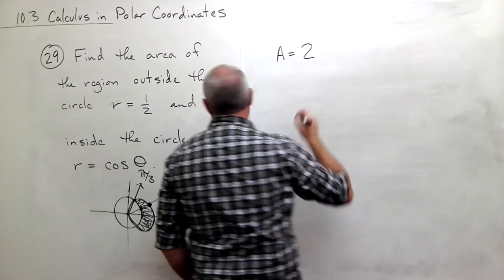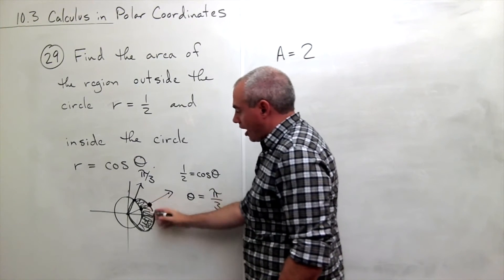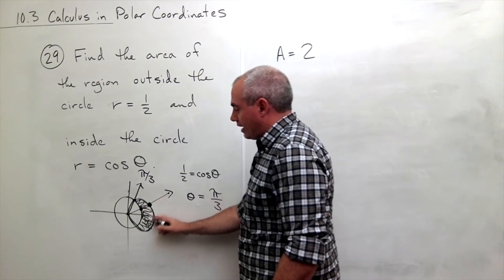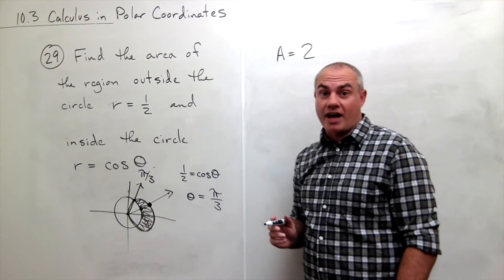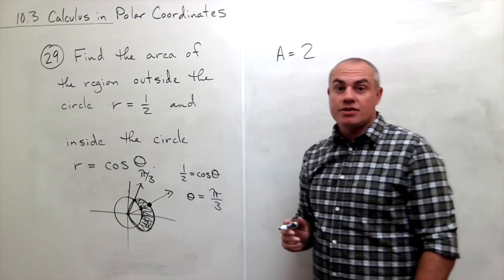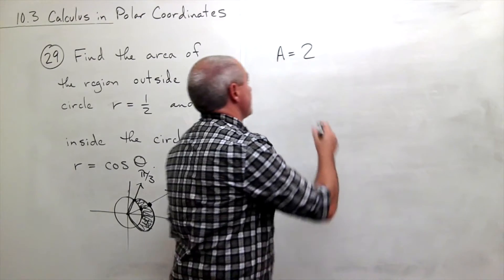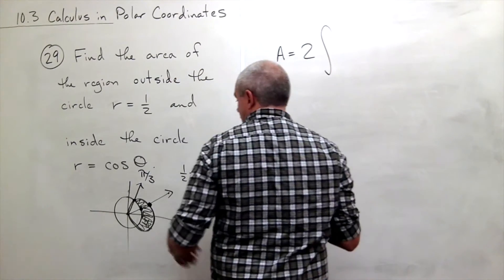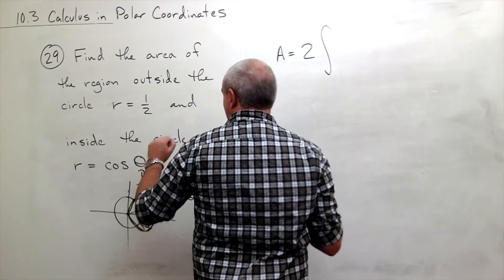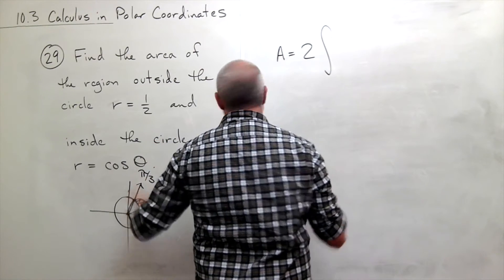So my area is going to be, I'm going to double this because I'm just going to integrate the top half of that crescent shape and then get the bottom half by doubling that value. Alright. So what I'm going to do is I'm going to double the integral from zero to pi over three